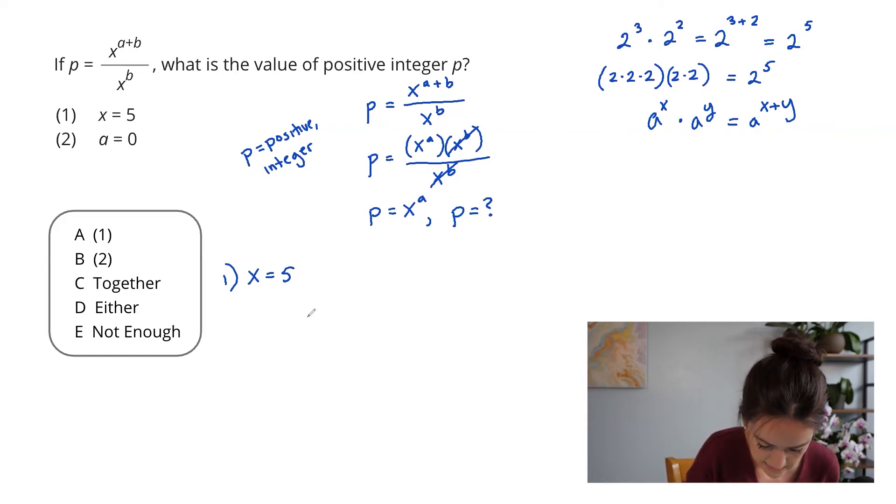In this case, I know that I'm trying to find x to the a. And that's going to let me try out some options for x and a. I know in statement one that x is five. Let's say that a is one and two.